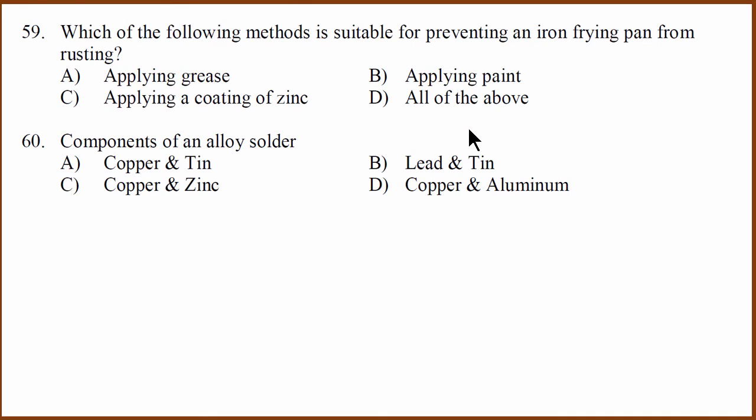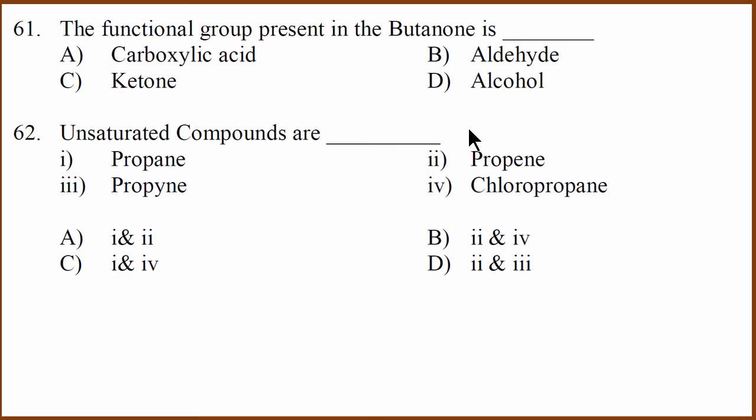Next. Which of the following methods is suitable for preventing an iron frying pan from rusting? What methods can we use? Applying grease on cooking utensils is not ideal. Applying paint, we can't really paint cooking utensils. Applying a coat of zinc, yes, you can do coat of zinc. So the correct answer is C. 60th question. Solder is actually an alloy of lead and tin.